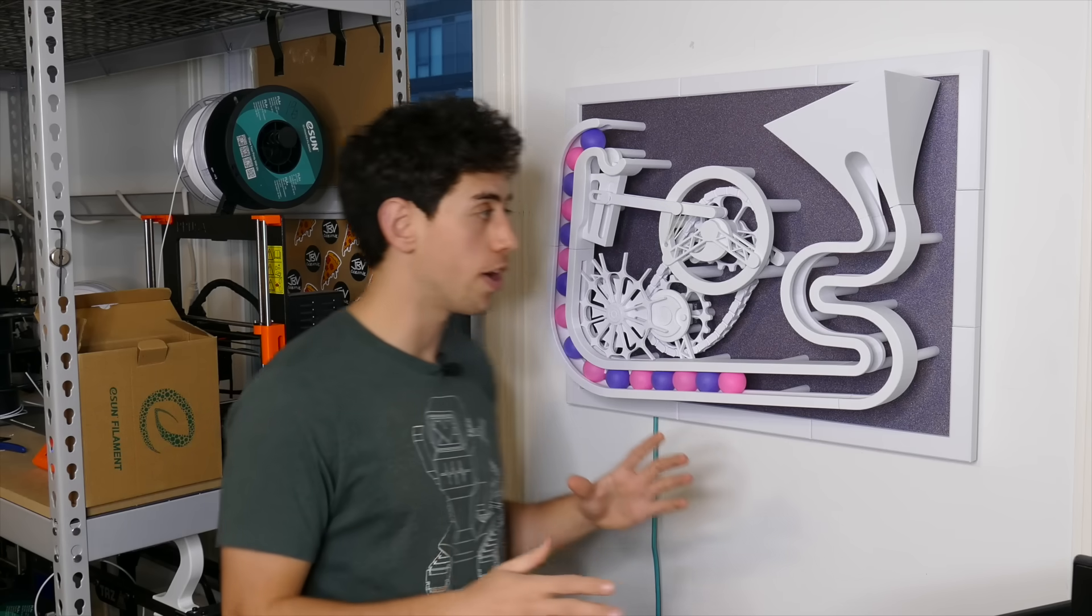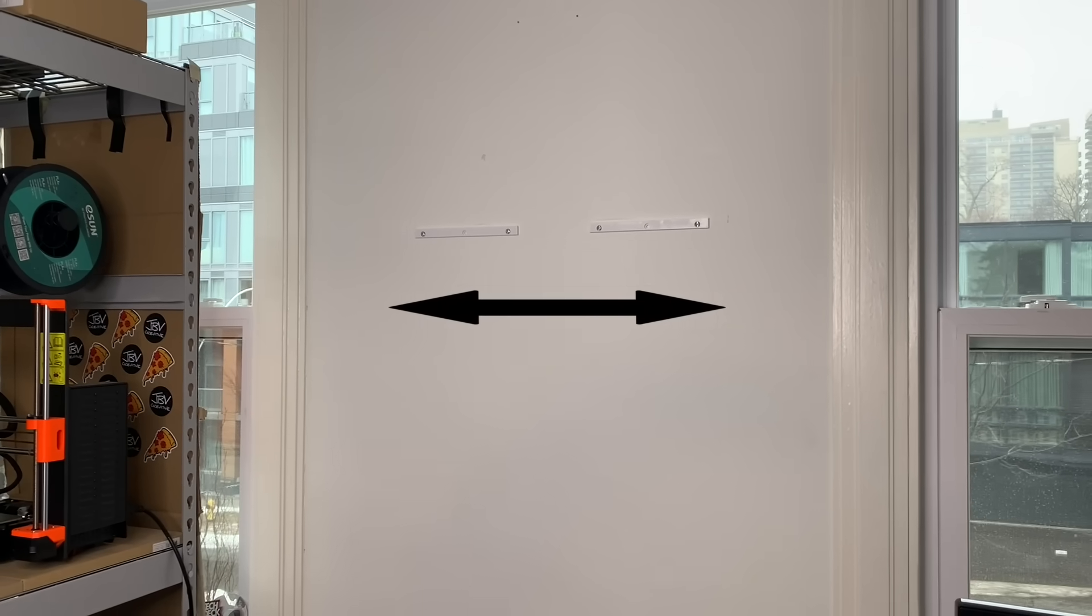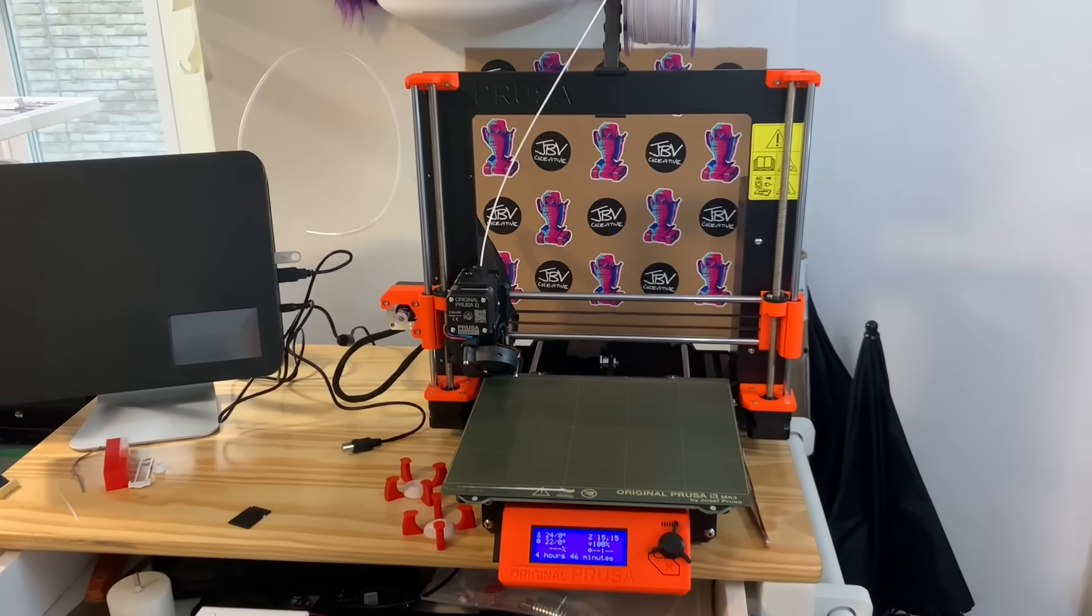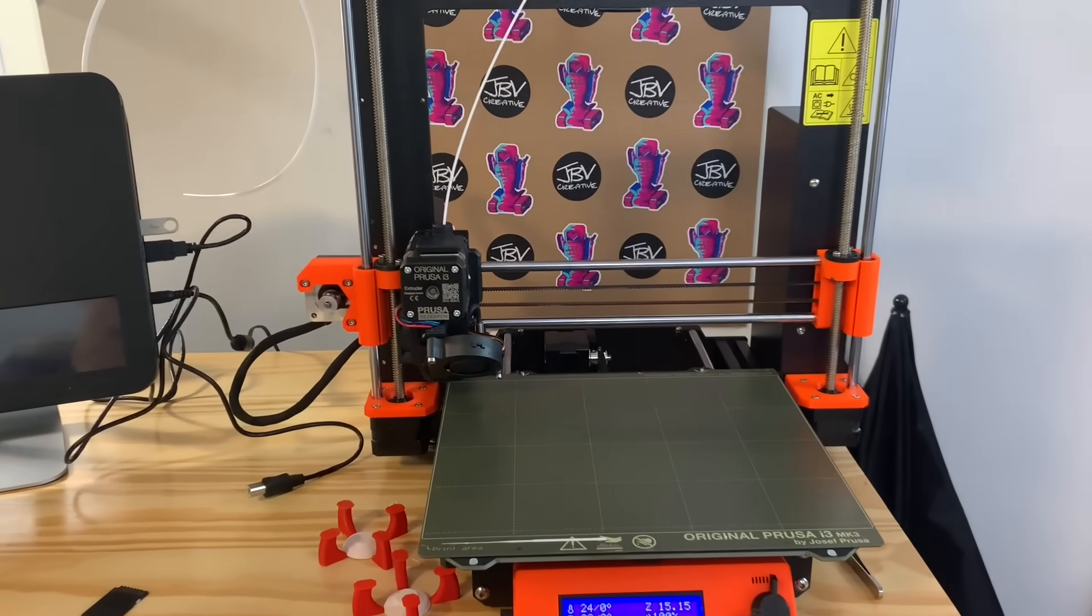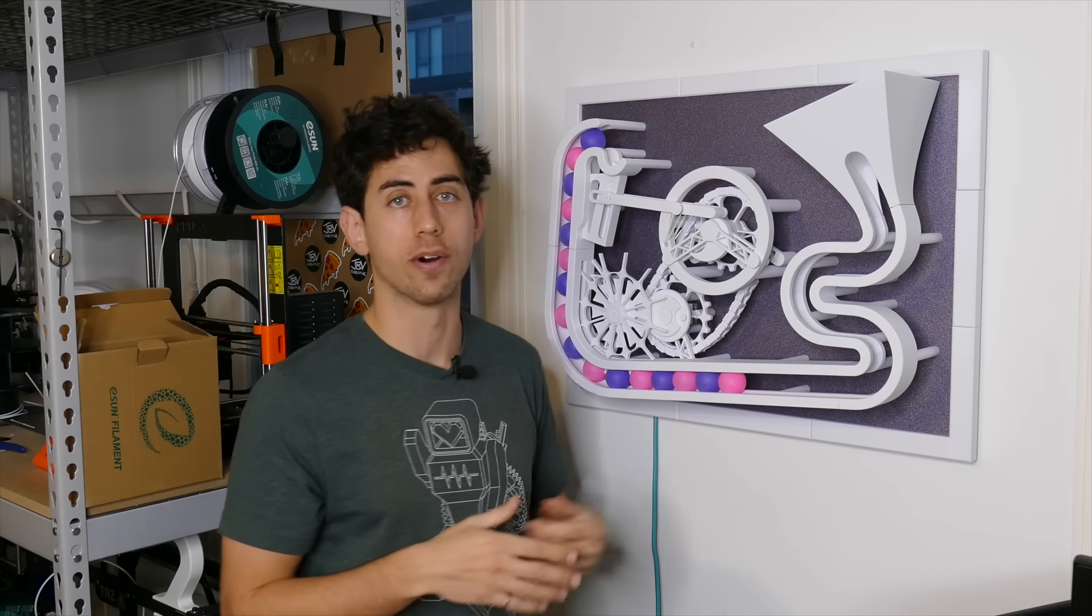The second main constraint was I wanted it to fit between these two windows right here. So there was an overall size constraint that I had to follow. Lastly, I wanted to be able to 3D print as much as possible on this sculpture. And that actually plays a huge role in how you design things moving forward.